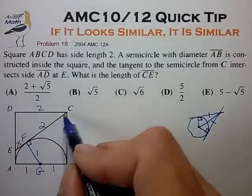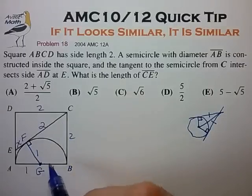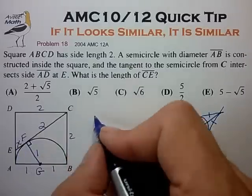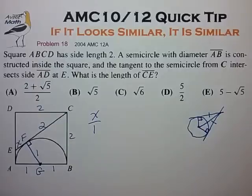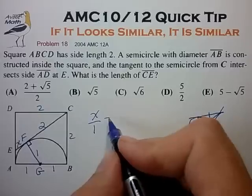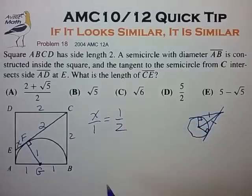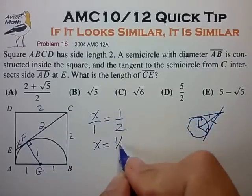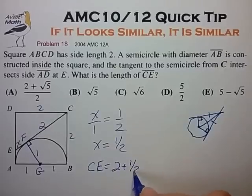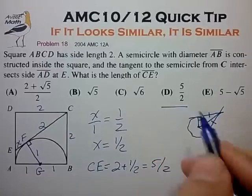If we assume that these quadrilaterals are similar, then the ratio of the short length to its long length should be the same as the ratio of the short length to its long length, from which we quickly see that X is in fact one half, and CE is now two plus a half, which is five halves for choice D.